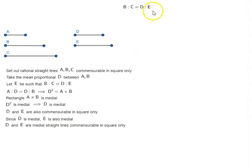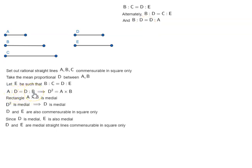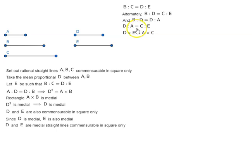Remember, we have B is to C is equal to D is to E — that is how we found E. Alternately, we can say B is to D is equal to C is to E. And B is to D is equal to D is to A, because we have A is to D equal to D is to B — we have just taken the inverse of the ratios. So, B is to D equals D is to A, which means D is to A equals C is to E. Writing this in product form: the product of extremes equals the product of the means, so D times E is equal to A times C.